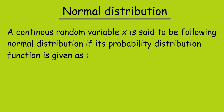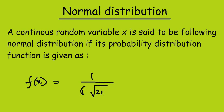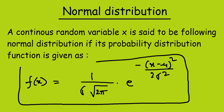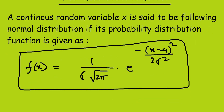In this short video we will discuss the normal distribution, see how normal distribution reduces to standard normal distribution, and solve one problem. A continuous random variable X is said to follow normal distribution if its probability distribution function is given as f(x) = (1 / (σ√(2π))) × e^(-(x−μ)² / (2σ²)).